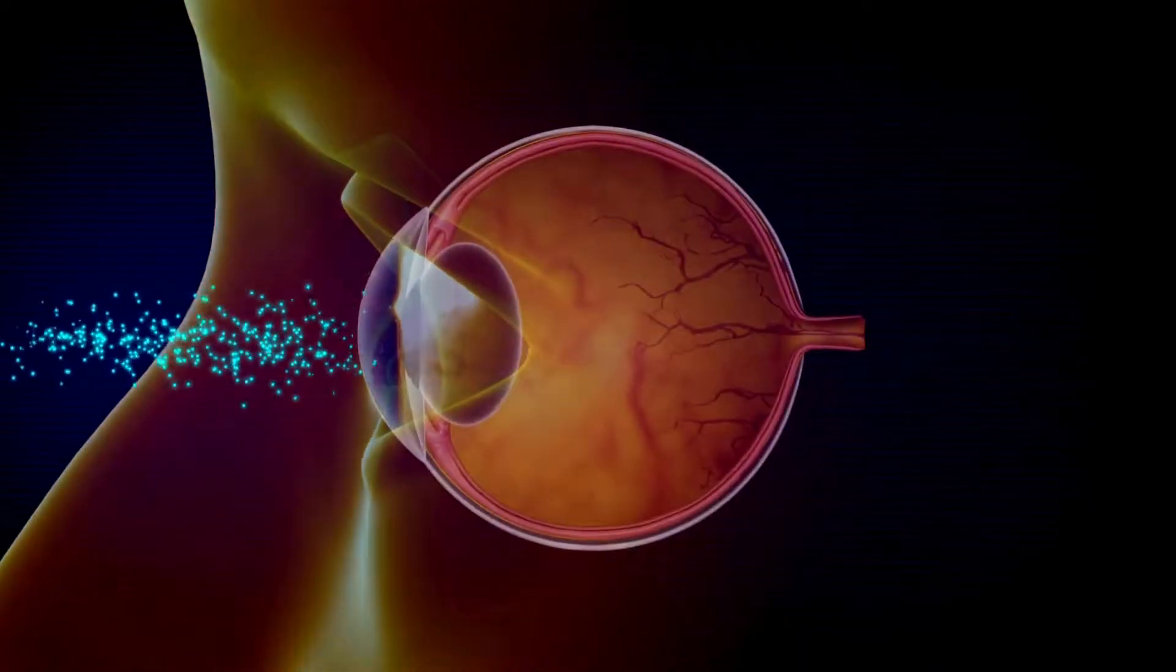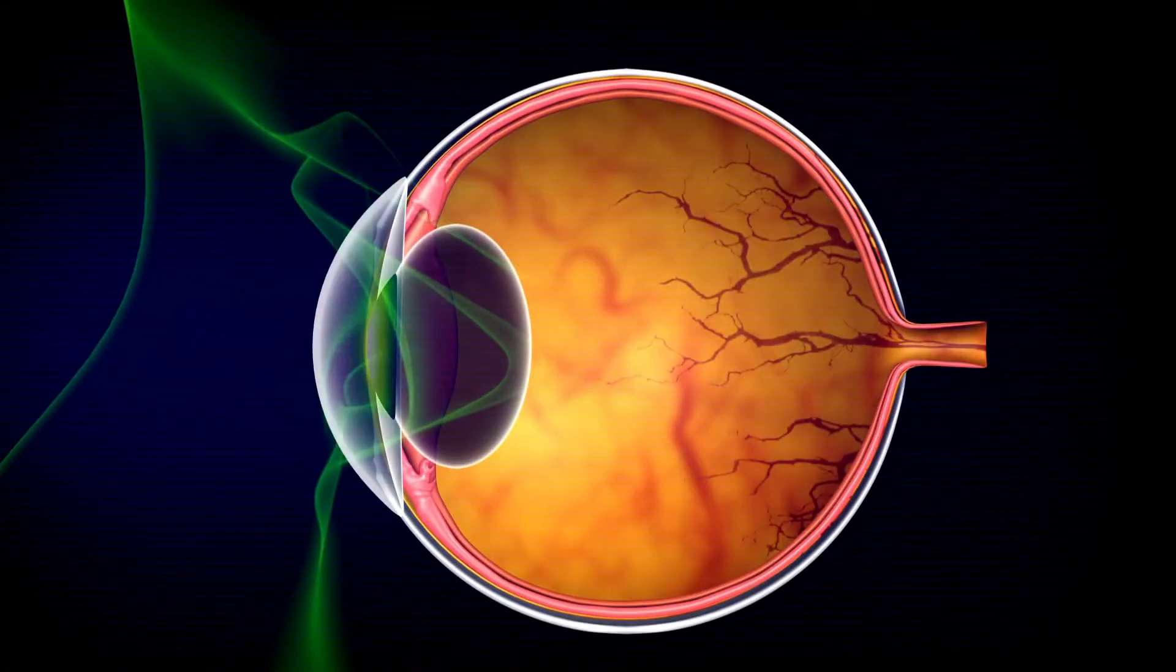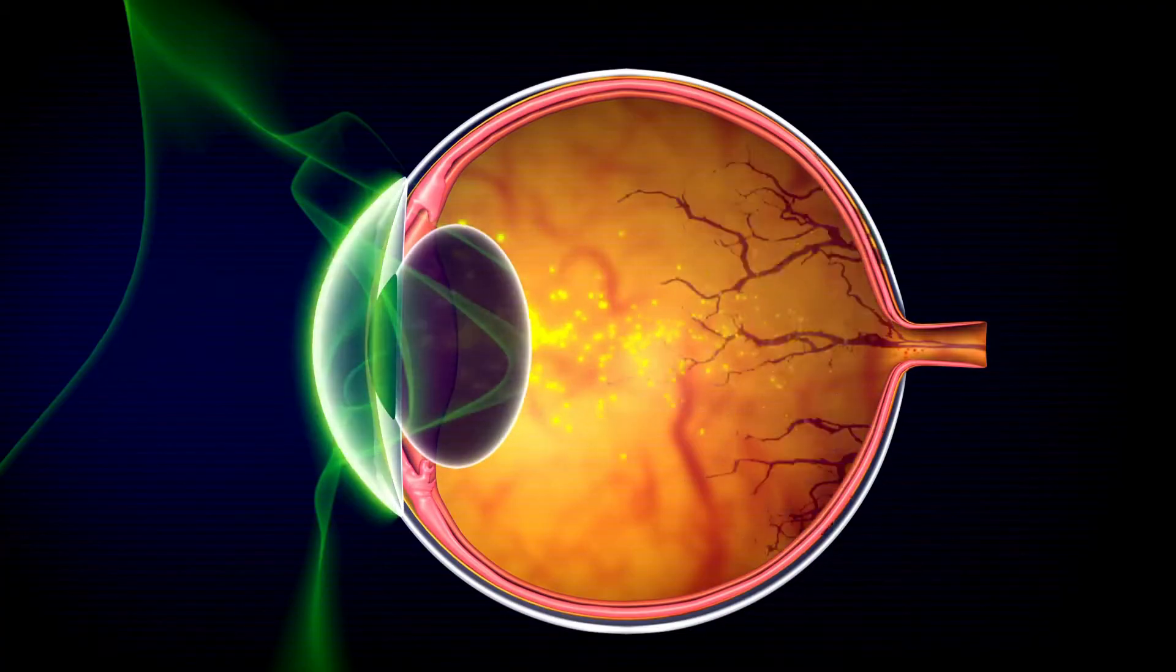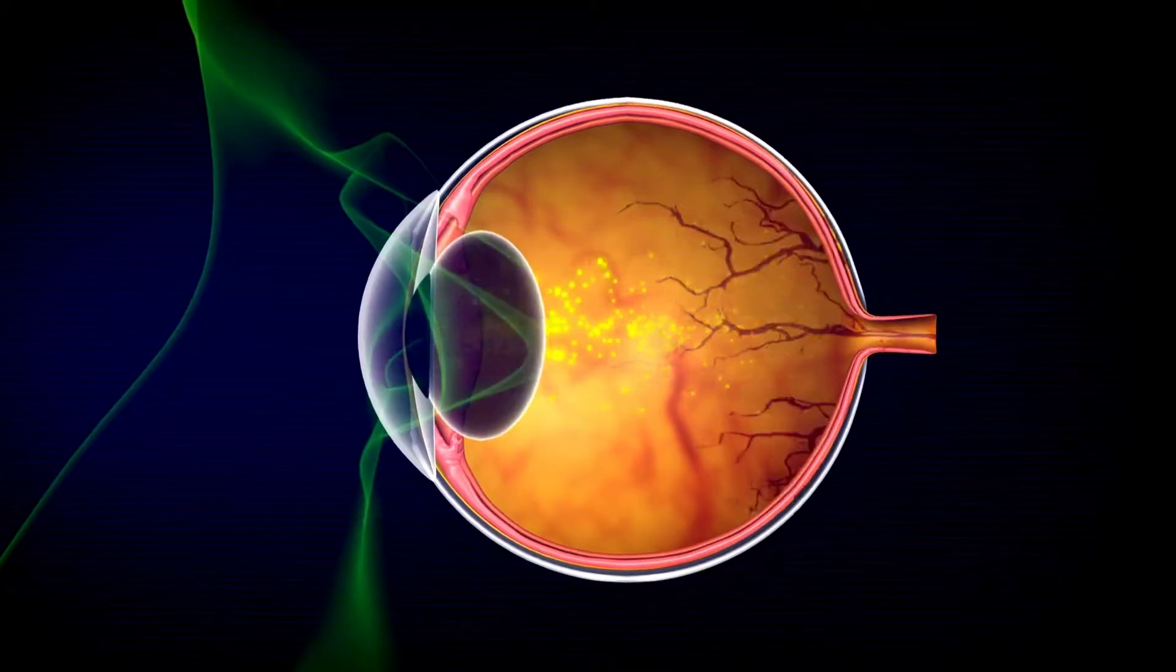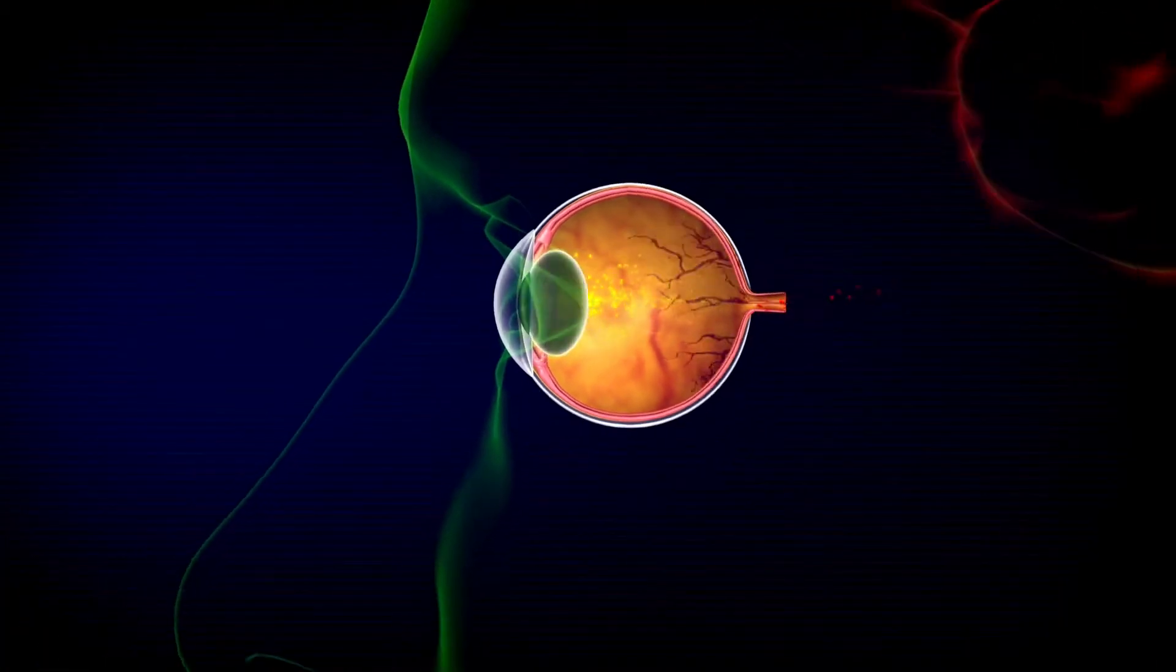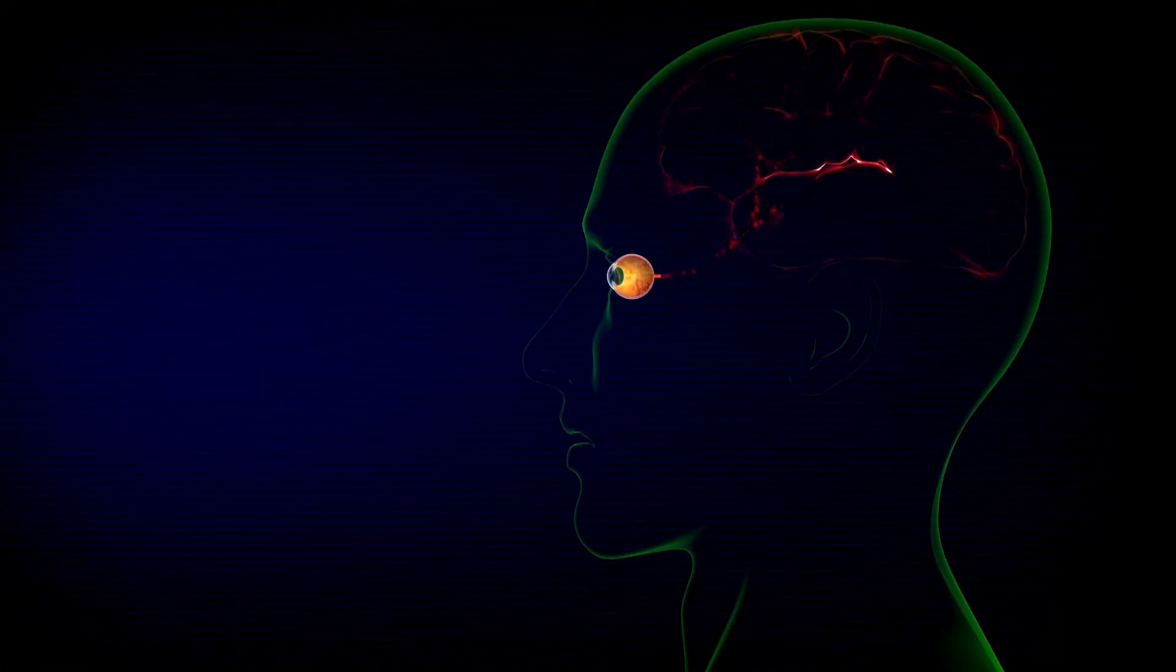Now, let's break down this incredible organ. The cornea, a transparent layer at the front of the eye, bends light as it enters. Behind it, we find the iris, that colorful part of your eye, which controls how much light enters through the pupil.